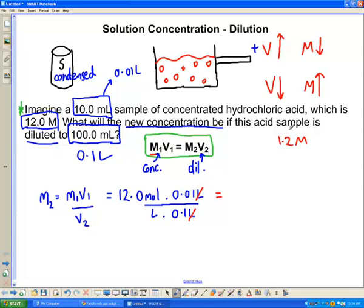So let's just see if that actually is what we do get. So what we end up with here is 0.12 moles per 0.1 liters, giving us an answer of 1.2 moles per liter, just exactly what we said here.